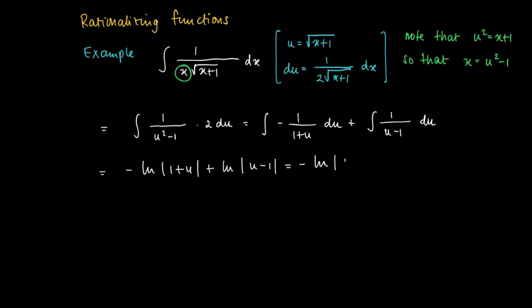And now substitute u back so that we find minus the logarithm of the absolute value of 1 plus the square root of 1 plus x minus 1 plus the integration constant.